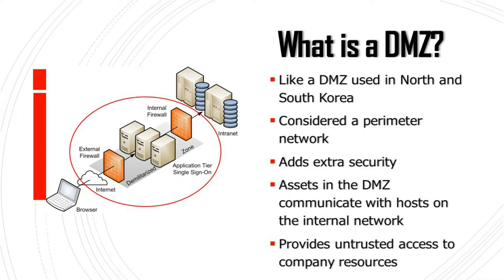So what is a DMZ? Have you ever heard of a DMZ in terms of war and geopolitical relations? You may have heard that North and South Korea have a small piece of land where they can meet and be civil. It's the little part that connects the safe and trusted side with the dangerous and untrusted side. The same can be said for a DMZ in a network. A DMZ is considered a perimeter network and adds an extra layer of security that protects the internal network. It will assume connections coming from the internet to be hostile and untrusted, and the organizational corporate network is the one that needs to be kept secure.